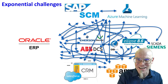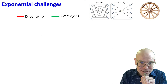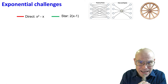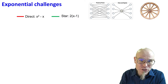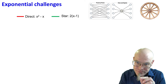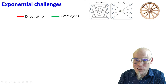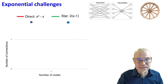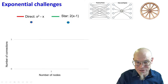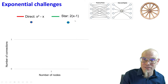To scale interoperability, network science offers an important insight: if you want to efficiently connect many different nodes, you create what is known as a hub-and-spoke network, also called a star network. This is much more efficient than a point-to-point network. In a hub-and-spoke design you have one intermediary hub connecting all nodes, whereas point-to-point connects every node directly to every other. Let's compare: the number of direct connections grows as x² − x, following the network externality equation.